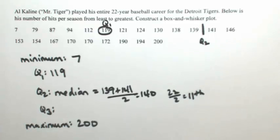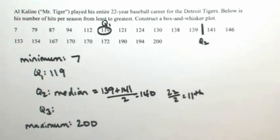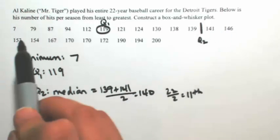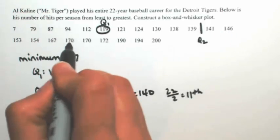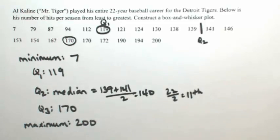Do the same thing on the right side. We're just finding the median of the right side. There's 11 numbers on the left, so there's 11 numbers on the right. I'm going to count the sixth number. [Counts to 6] So Q3 is 170.